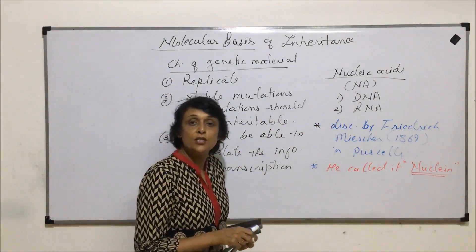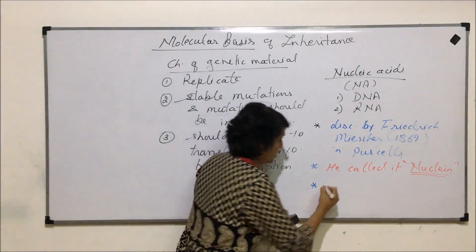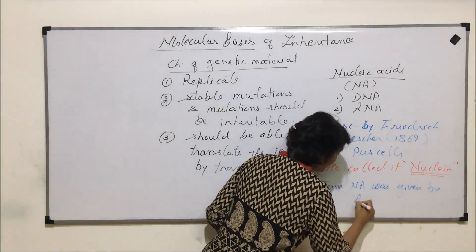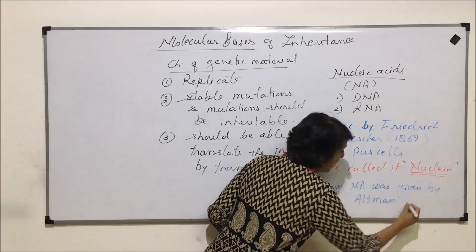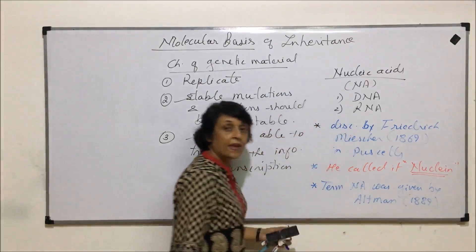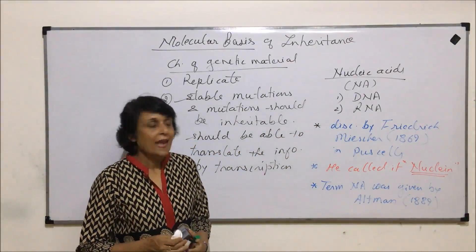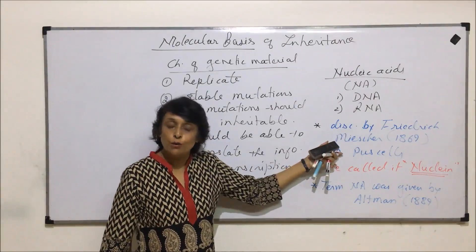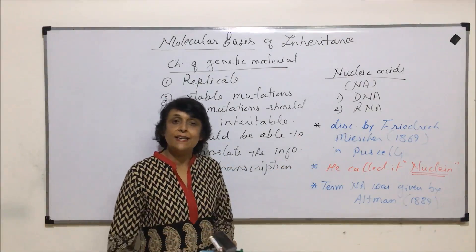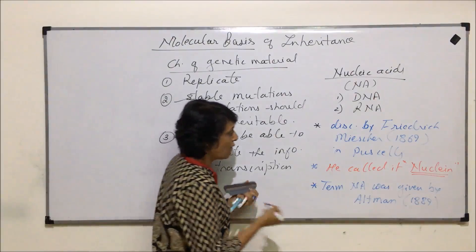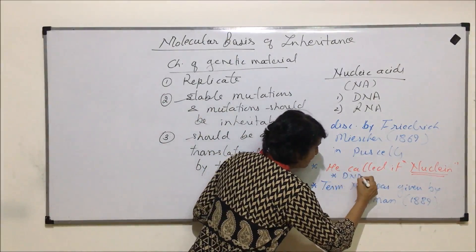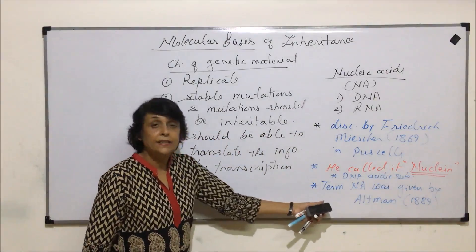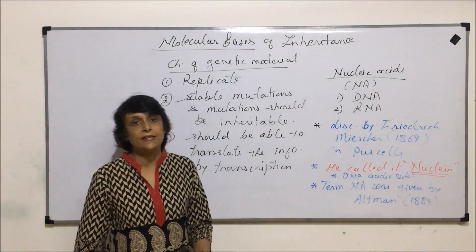Altman named this nuclein as nucleic acid. The term nucleic acid was given by Altman in 1889. When it was first discovered, it was called nuclein and was observed from pus cells. Frederick Miescher found this material in the form of an acidic substance — he reported an acidic substance in the pus cells and called it nuclein. The term nucleic acid was given much later by Altman.